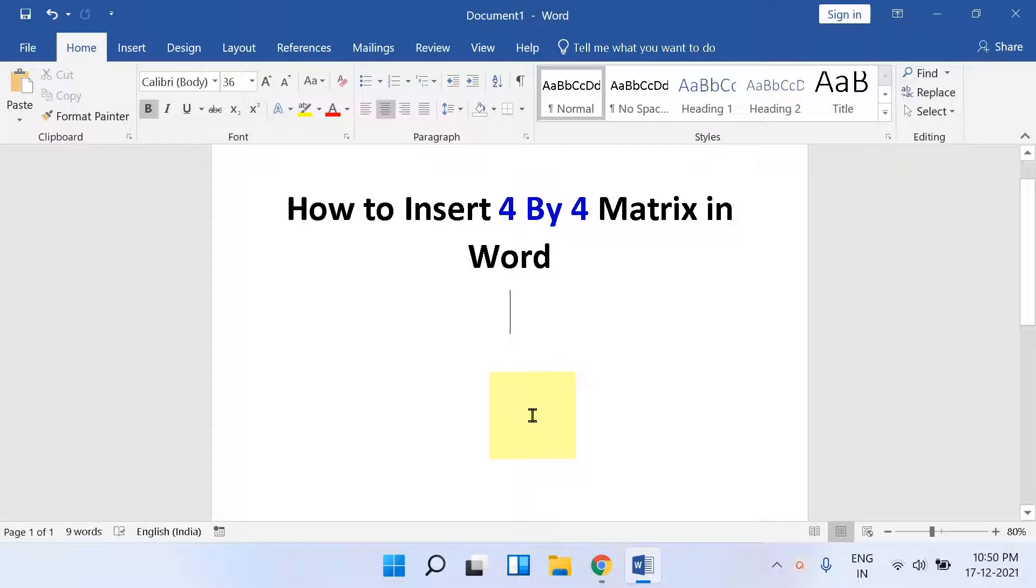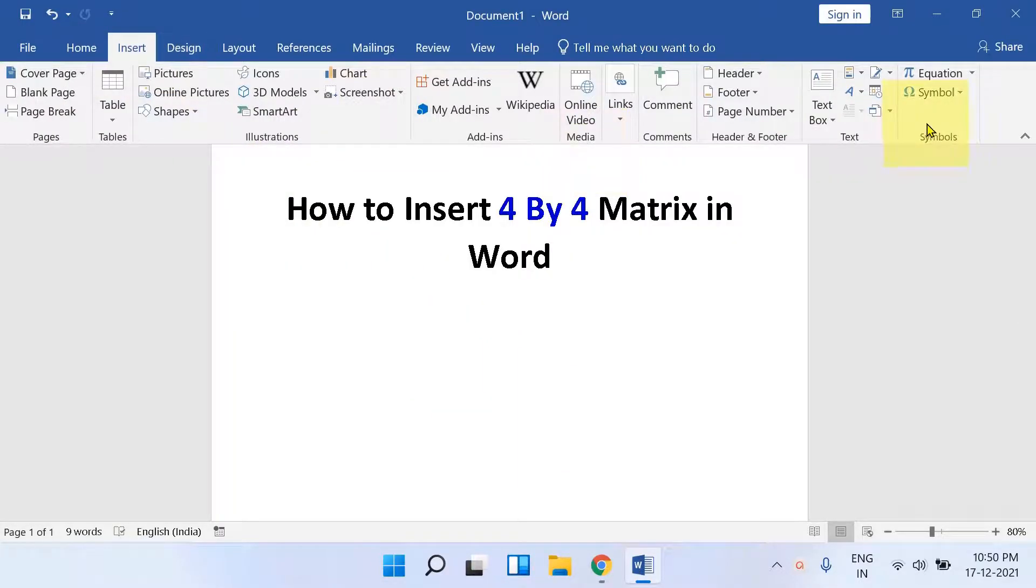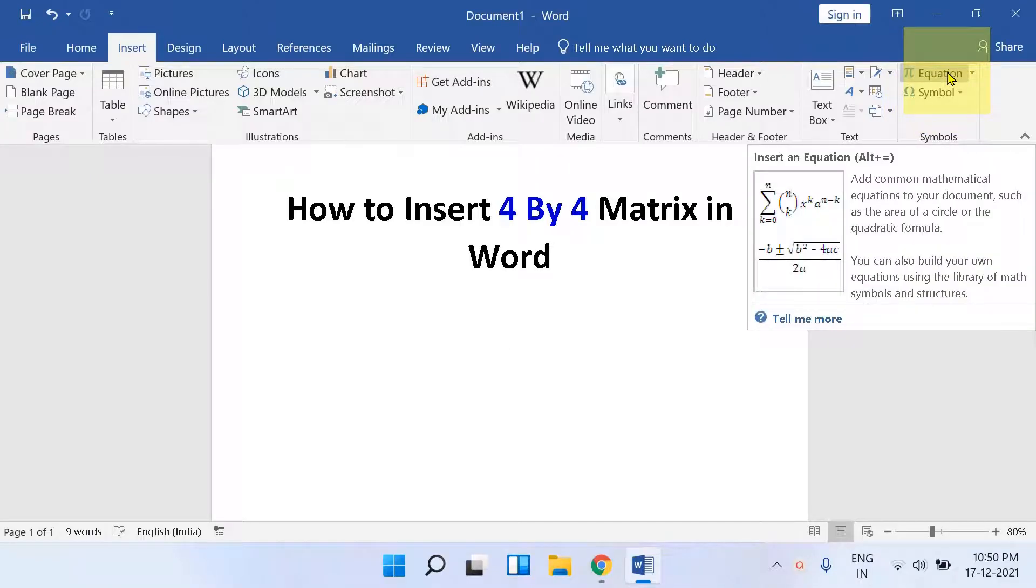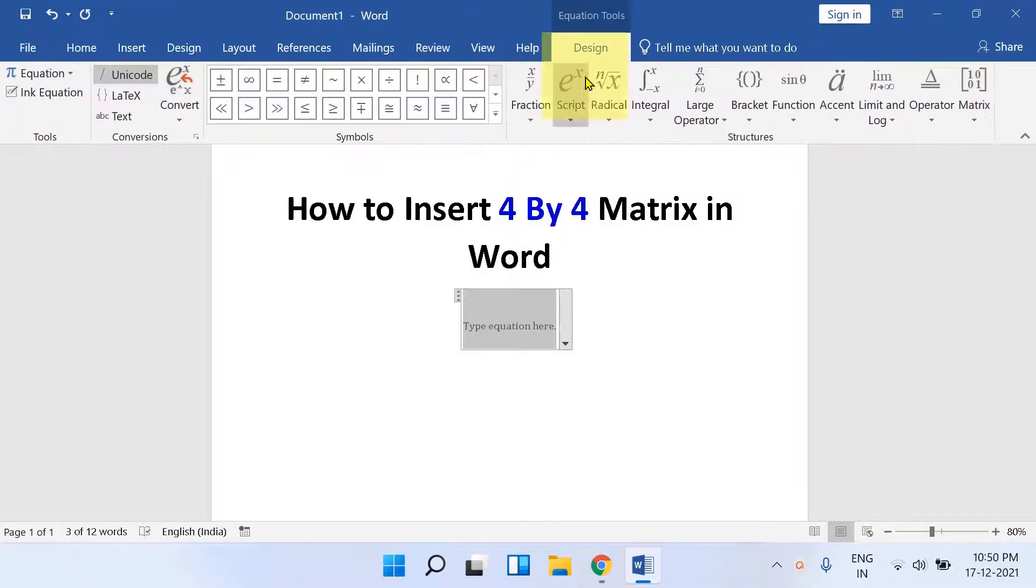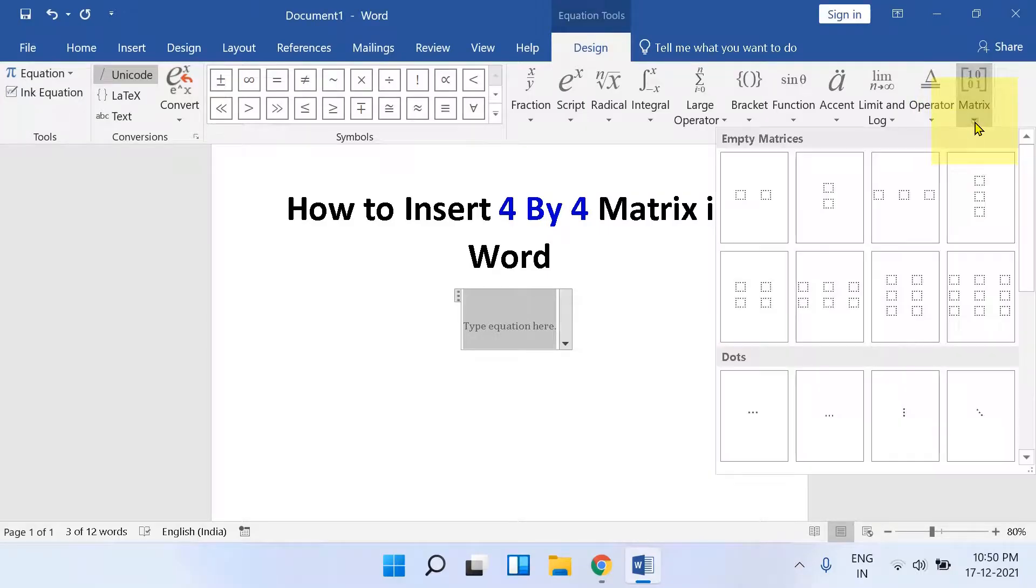To insert 4x4 matrix, click on the Insert tab. At the right hand side you will see the option Equation. Click on it and under the Design tab, click on the matrix drop down and first select 3x3 empty matrix.